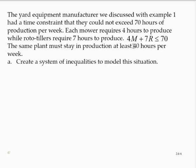The yard equipment manufacturer we discussed in a previous example had a time constraint that they could not exceed 70 hours of production per week. Each mower requires four hours to produce, while rototillers require seven hours to produce. And we had the inequality 4m plus 7r is less than or equal to 70.